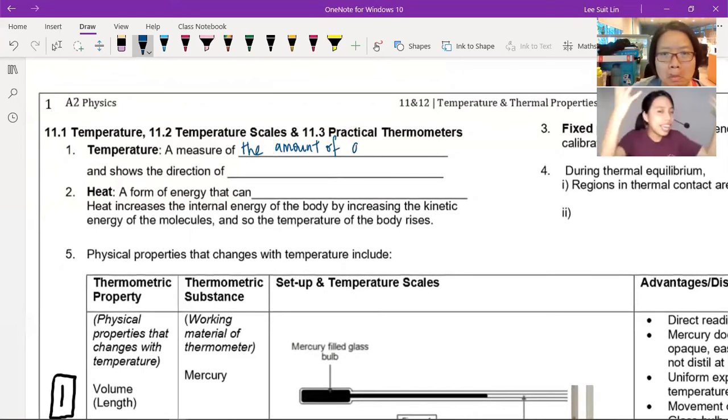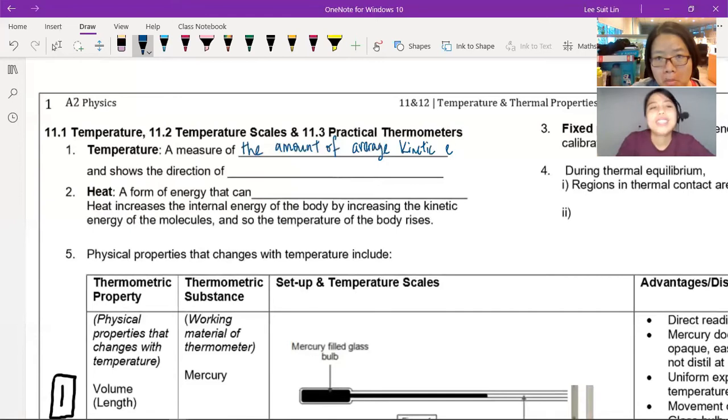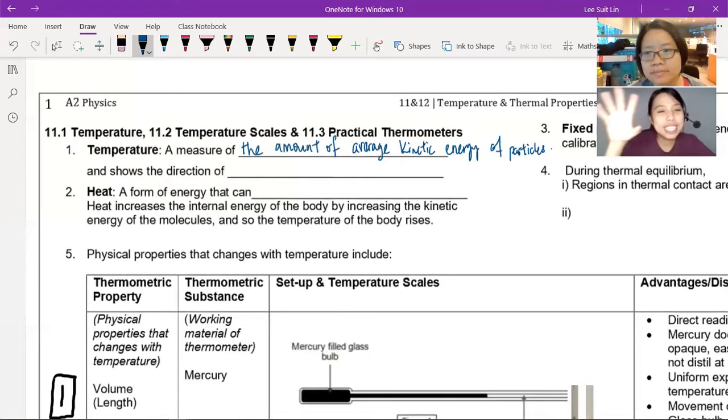Temperature here is your measure of the amount of average kinetic energy of particles. Why suddenly got particles? Then the air, your body is liquid, right? Got particles, right? So let's think about air. There are air particles, they are moving around, so they have kinetic energy. So let's say, they have a lot of kinetic energy means they have more temperature.